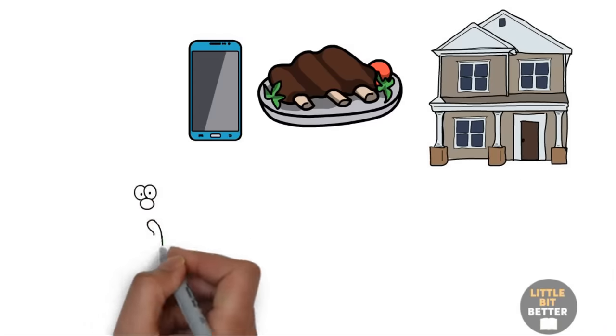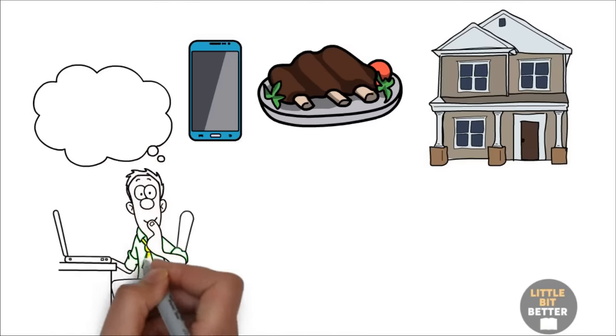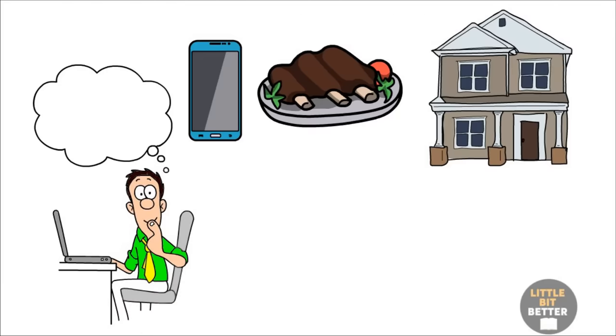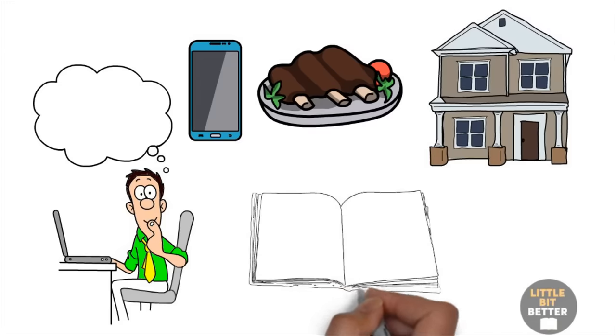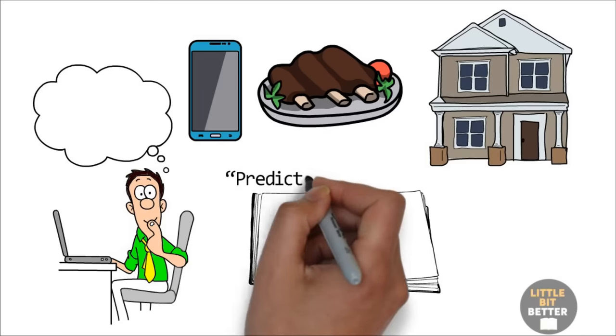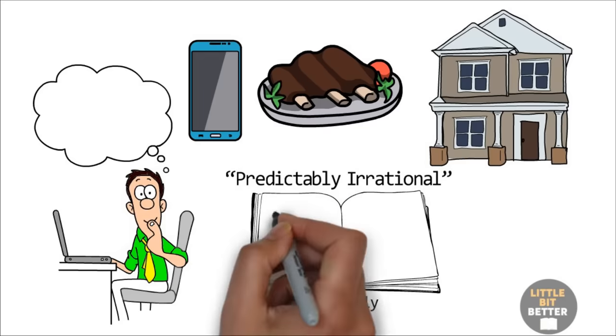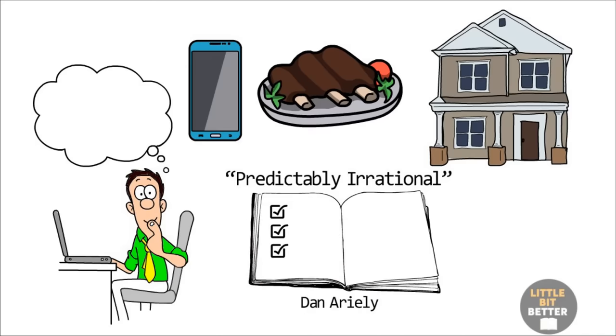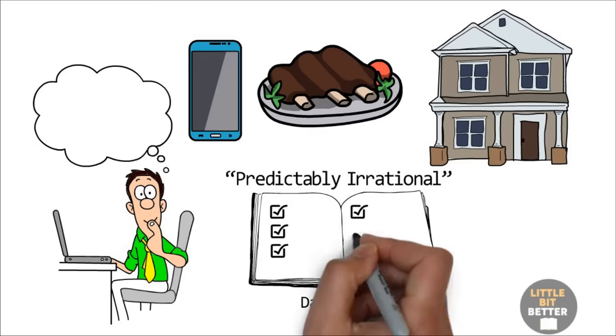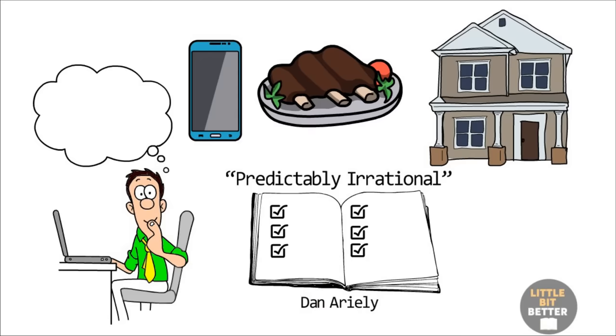We tend to think that we make all these decisions in a very rational way, but the majority of the time, it's not the case. We are highly irrational and easy to manipulate. In this video, I'll explain the reasons by summarizing the book called Predictably Irrational, written by Dan Ariely. If you are an entrepreneur and plan to sell products or services, I highly recommend this book. It has so many valuable lessons for business owners as well as for consumers.